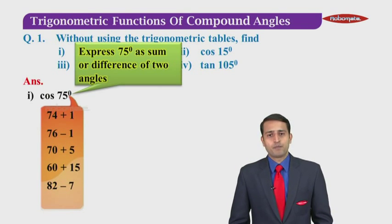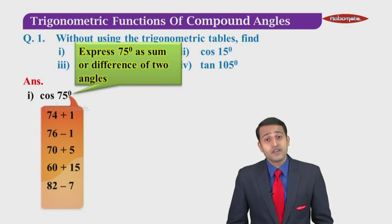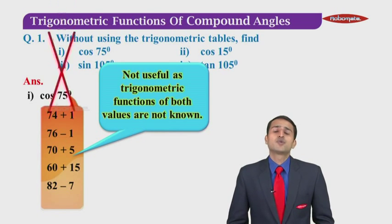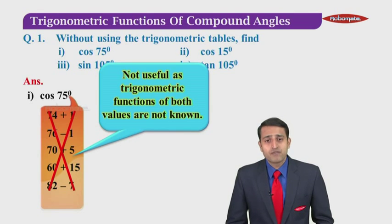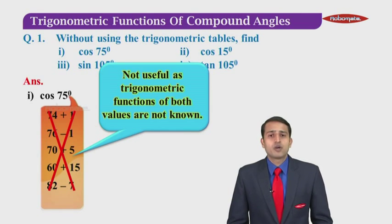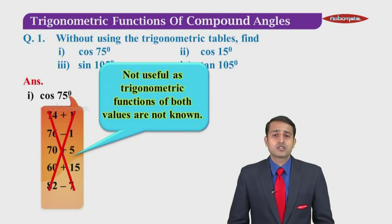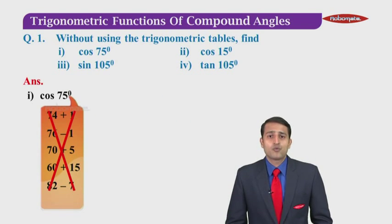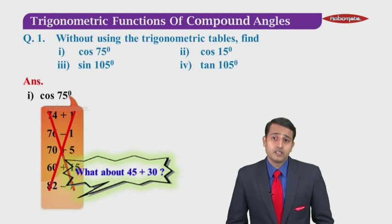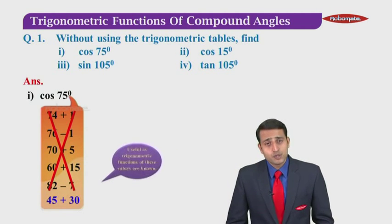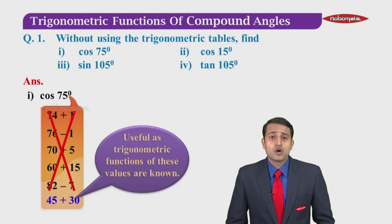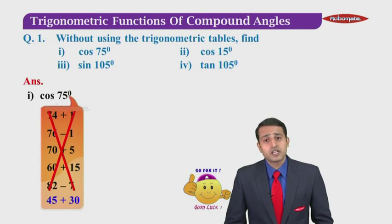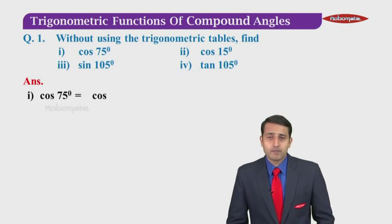The problem is those combinations are not useful to us because the trigonometric function values for both angles are not known. We don't know sin 70° or cos 15° independently from standard values. So what about 45 plus 30? If we see 45+30, it is useful to us because the trigonometric functions of these values are known. So we can say writing 75° as 45°+30° makes sense.